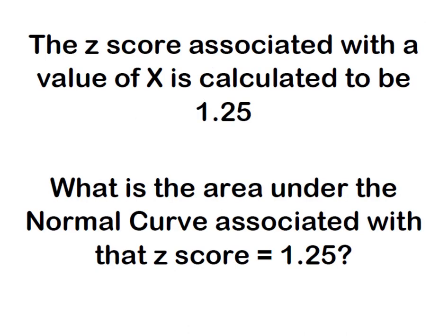So we have a value of x and the z-score associated with it is calculated to be a positive 1.25. Question is, what's the area under the normal curve associated with that z-score of 1.25? We know it's 1.25 standard deviations above the mean, but what is the area associated with that?